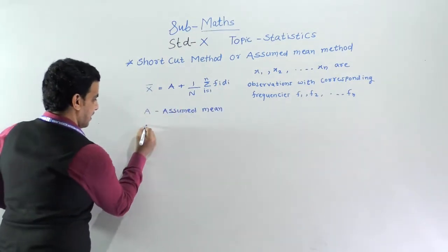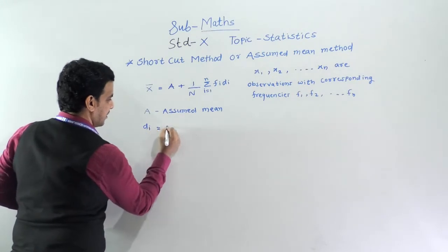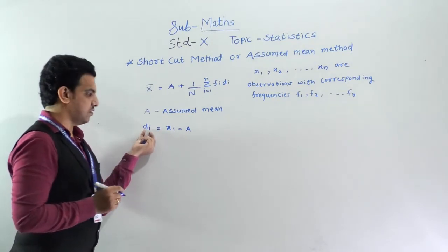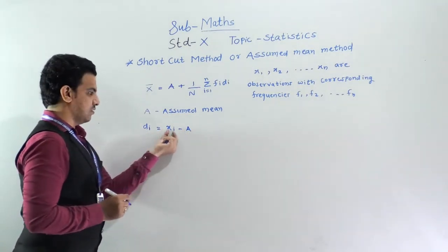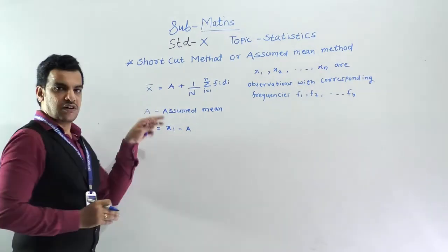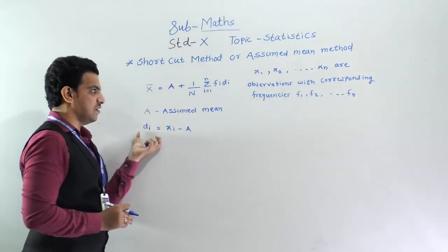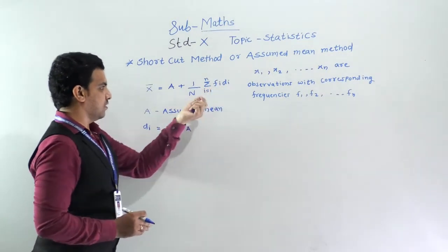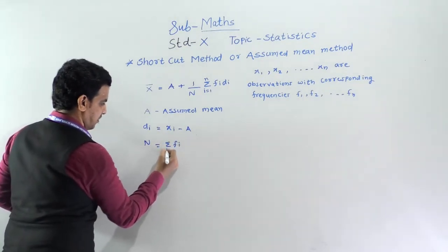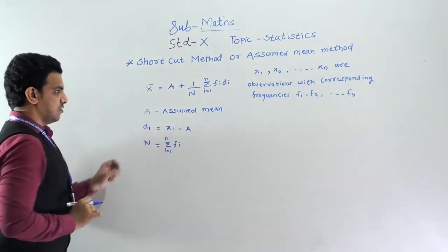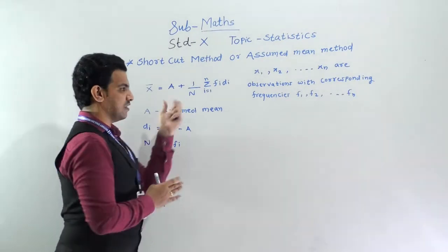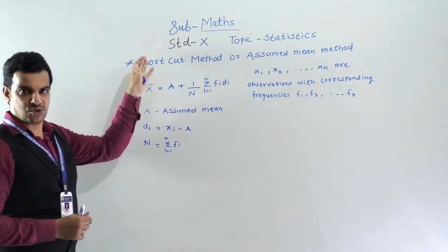I will explain di. So di means xi minus A. If we change i: d1 = x1 minus A, d2 = x2 minus A, and so on. After that, we have to find fi·di. Then we find the sum of fi·di and put all these values into the formula. Here, n means n = Σfi from i=1 to n. So we find all these values and put them into the formula to get x̄ using the shortcut method.